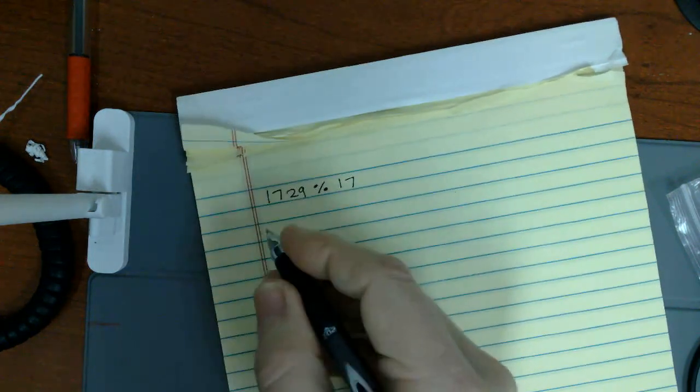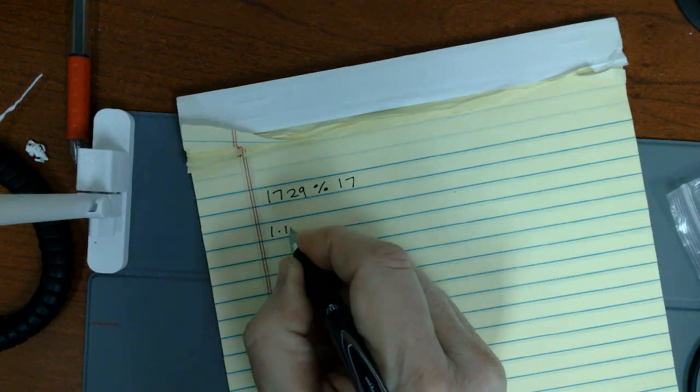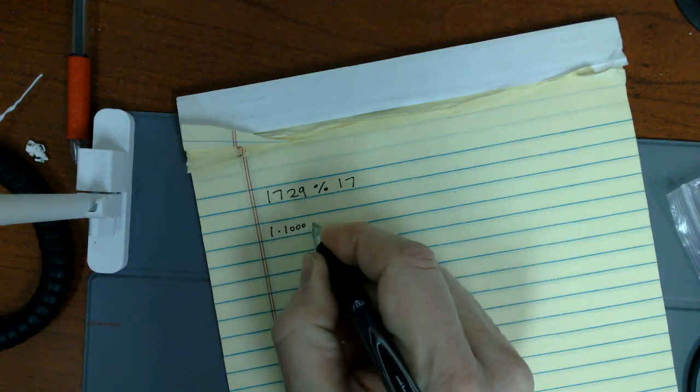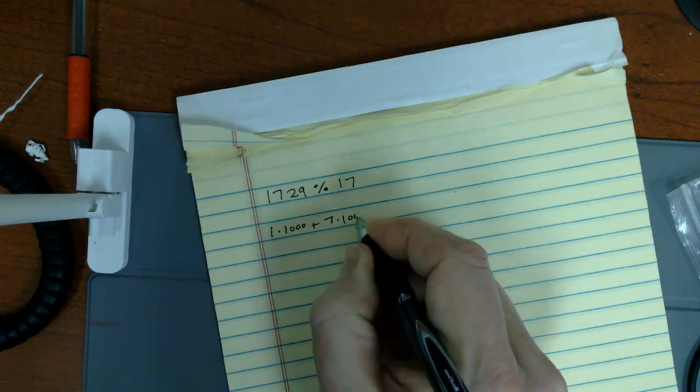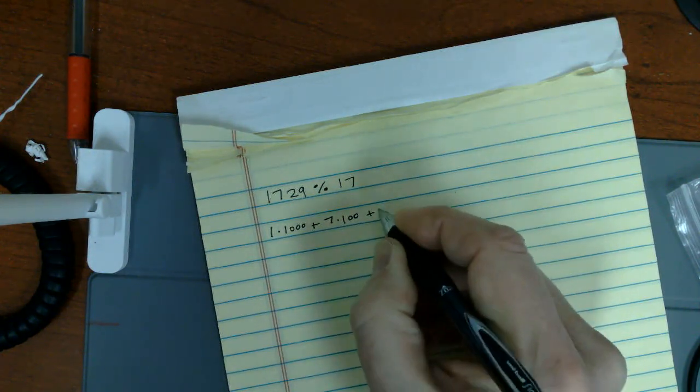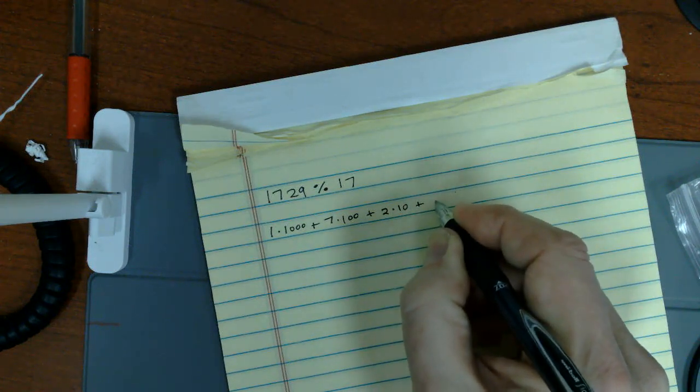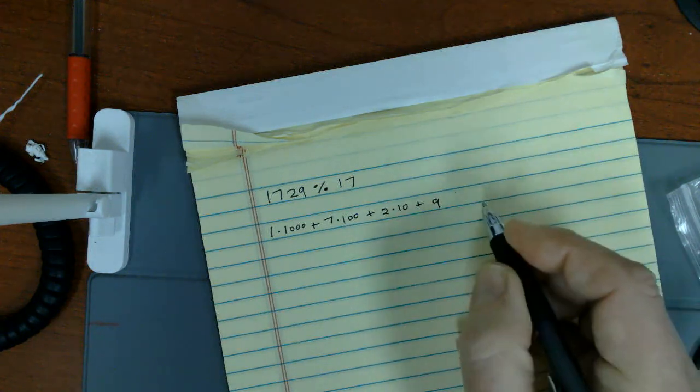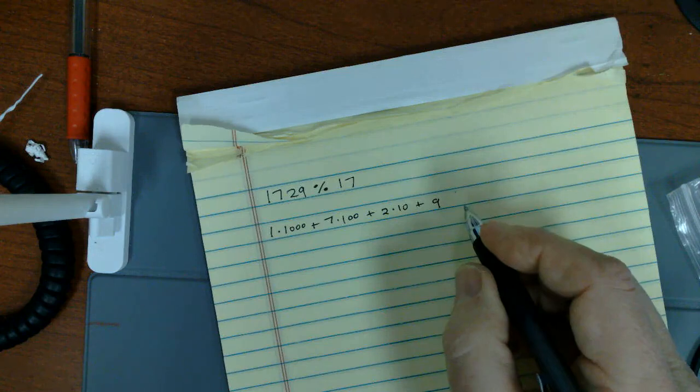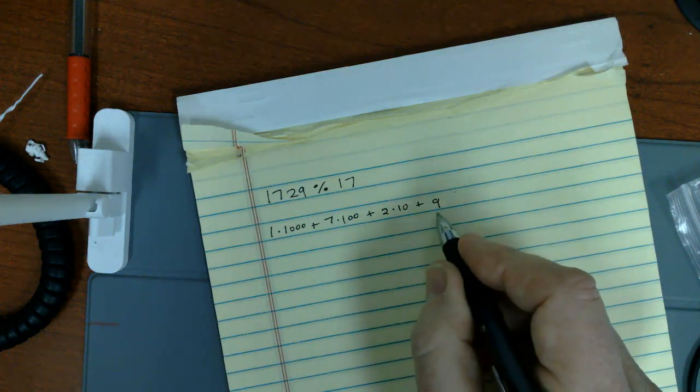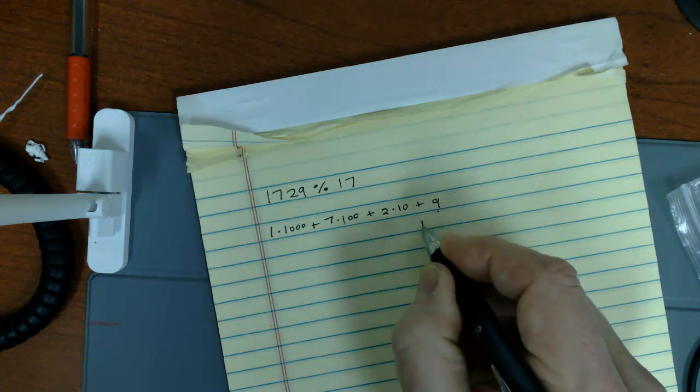So let's take this and I'm going to write it as 1 times 1000 plus 7 times 100 plus 2 times 10 plus 9. Well, first off here, let's kind of get our stuff organized. 9 mod 17 is just going to be 9.